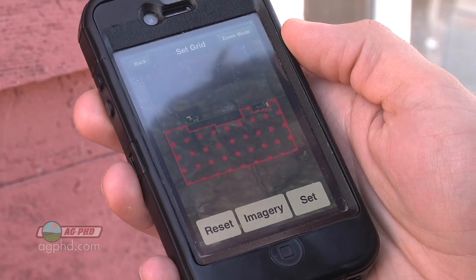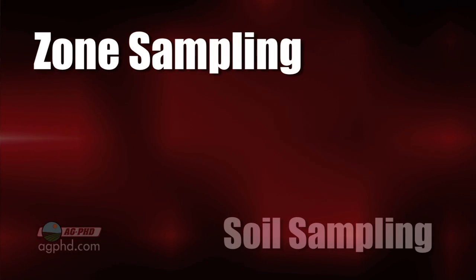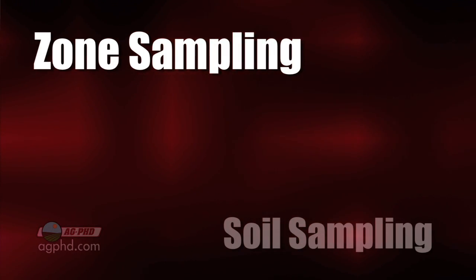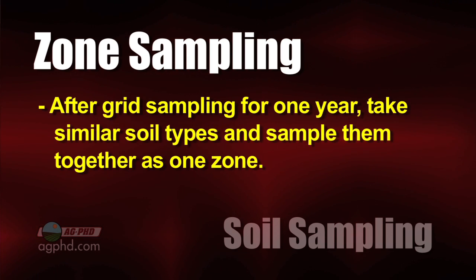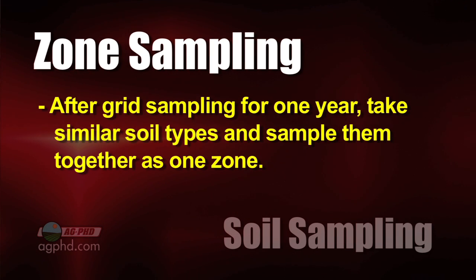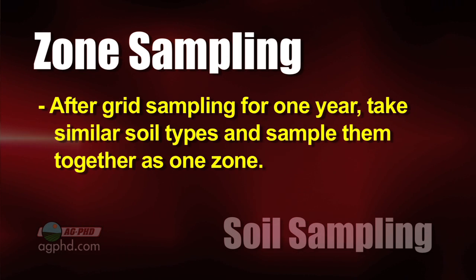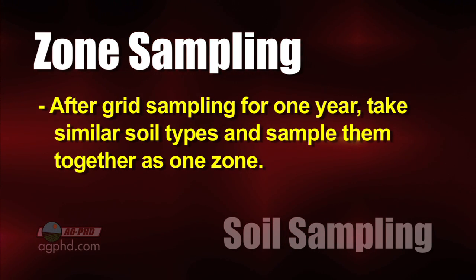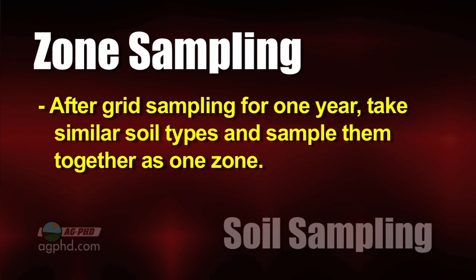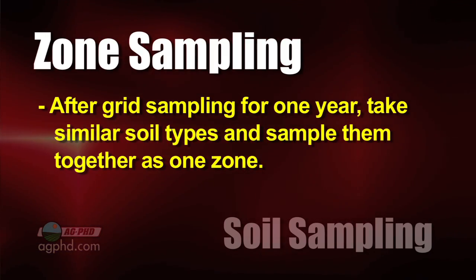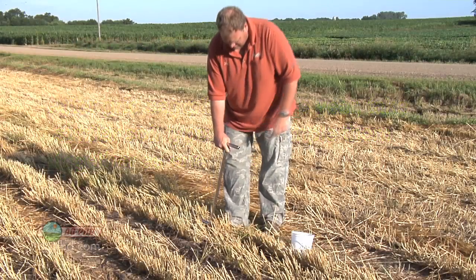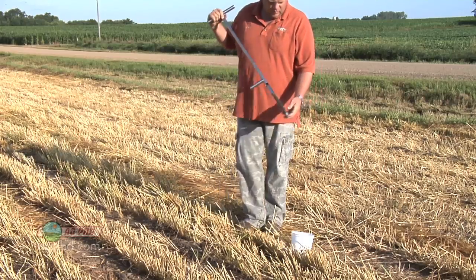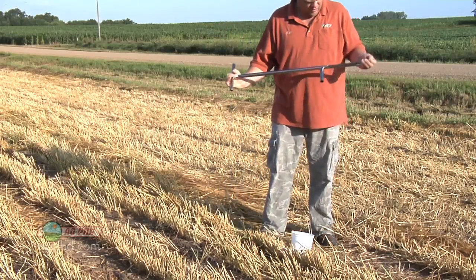On our farm, rather than grids we've gone to zones. If you don't know how to do this, it's simple: do one year of grid sampling first, then combine the grids that are similar. Instead of having 20 grids in a 40-acre field, you might be down to eight different zones — fewer samples to pull and less money spent overall on soil testing.